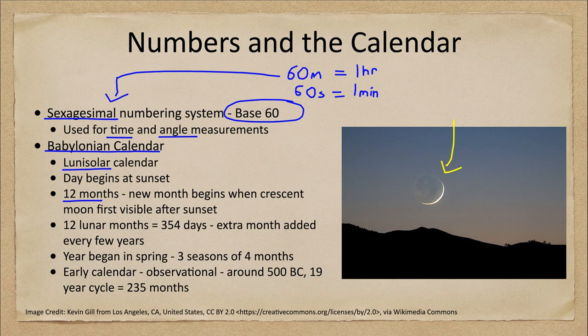The month would run through the entire cycle of the moon — 29 and a half days — until you again saw that very thin crescent moon right after sunset. You can't see the new moon itself, so the month wouldn't start then. Instead, they used the first visible crescent, which was actually a challenge to find.